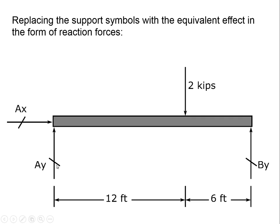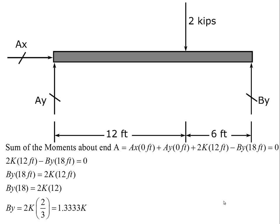Using standard arrows to represent dimensions: this is a beam with an overall length of 18 feet, and the 2-kip force is 6 feet from the right end of the beam — meaning 12 feet from the left end.